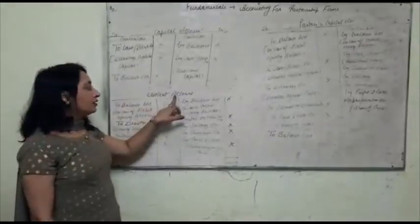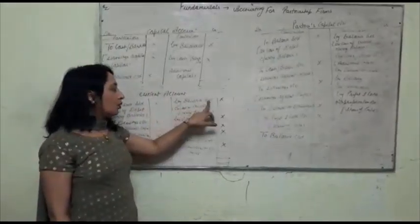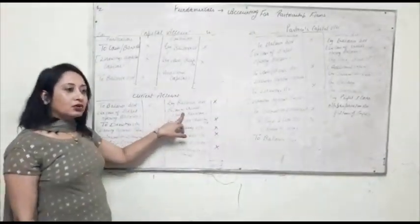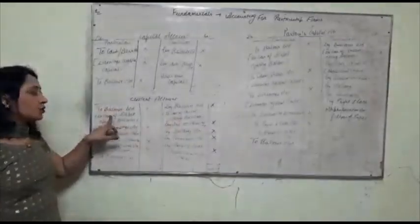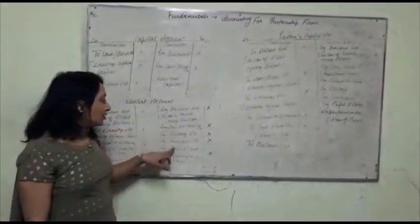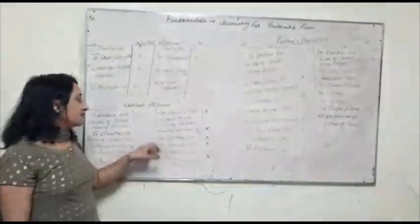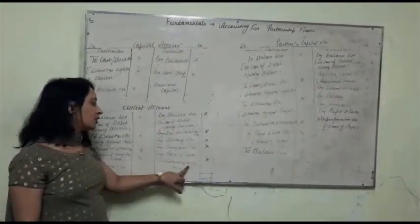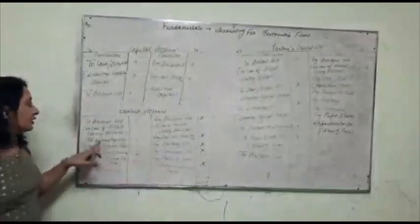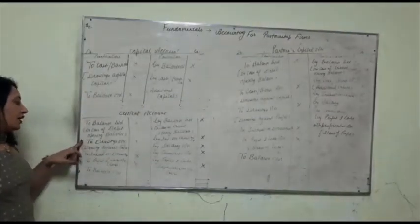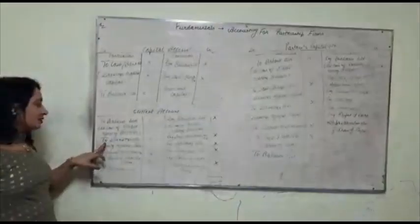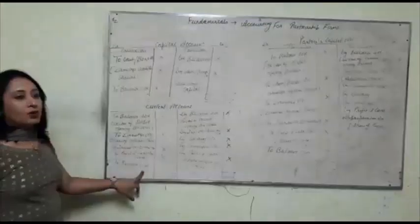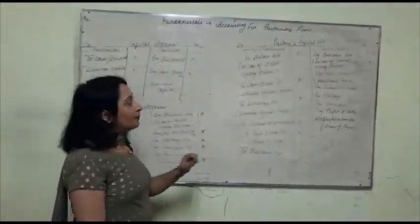The current account also starts with by balance brought down — if there is any credit balance it is shown on the credit side, and any debit balance is also noted. The credit side shows income items for the partners: salary, commission, interest on capital, and by profit and loss appropriation account meaning share of profit. The debit side shows expenses: to drawings, interest on drawings, to profit and loss account meaning share of loss, and to balance carried down.